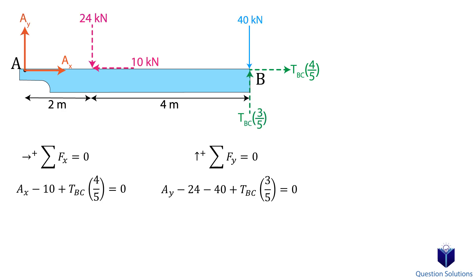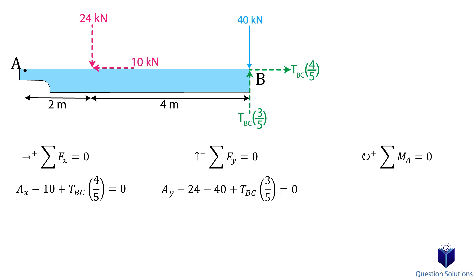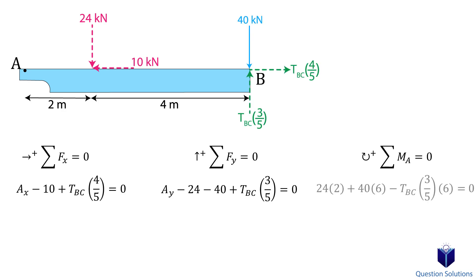That additional equation is going to be a moment equation. This is usually the case with most questions — you'll end up needing three equations: one for x-axis forces, one for y-axis forces, and one moment equation. We want to eliminate as many unknowns as possible, so we write our moment equation about point A, which gets rid of Ax and Ay. Remember, wherever we calculate the moment about, we ignore the forces applied at that point because their line of action goes through that point. The 10 kN force and the x component of the tension won't create a moment, because their lines of action go through point A.